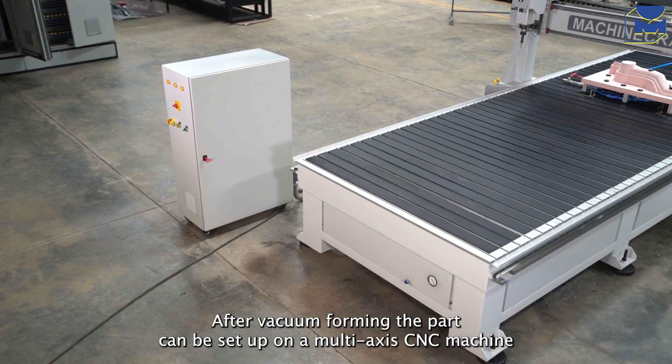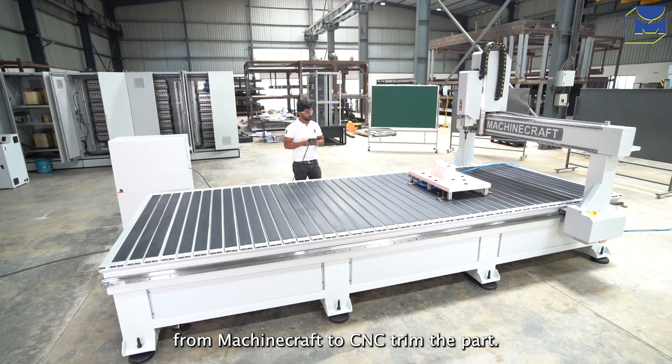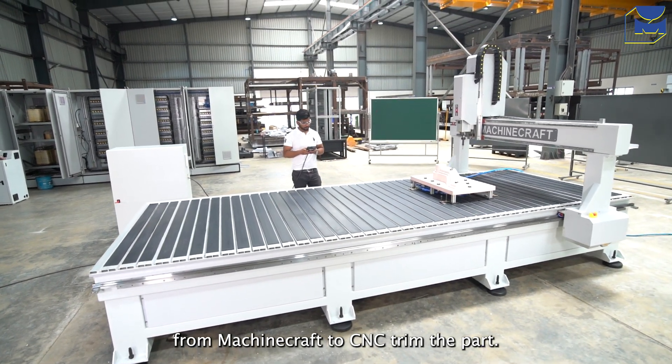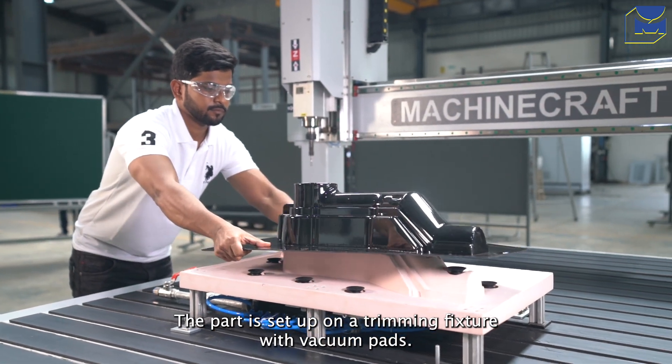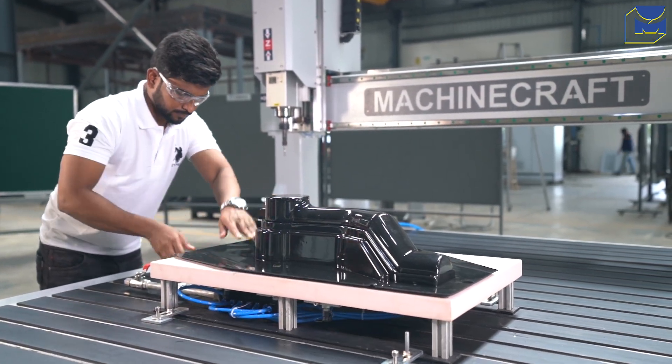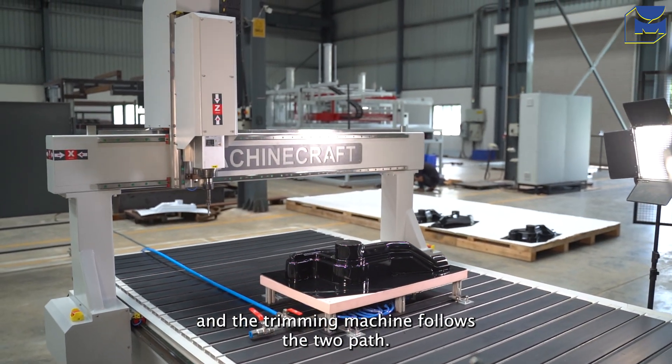After vacuum forming, the part can be set up on multi-axis CNC machine from Machinecraft to CNC trim the part. The part is set up on a trimming fixture with vacuum pads. The cutting program is pre-loaded on the controller and the trimming machine follows the toolpath.